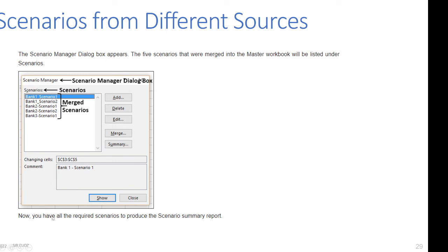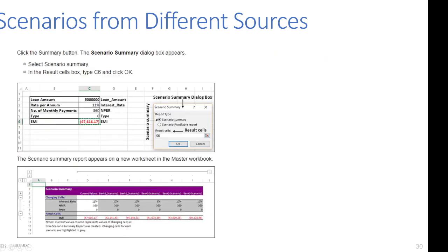Now you have all the required scenarios to produce the scenario summary report. Click the Summary button. The Scenario Summary dialog box appears. Select 'Scenario Summary', and in the Result Cell box type C6 — that is the address of the EMI result cell. Click OK, and the Scenario Summary report appears on a new worksheet in the master workbook.